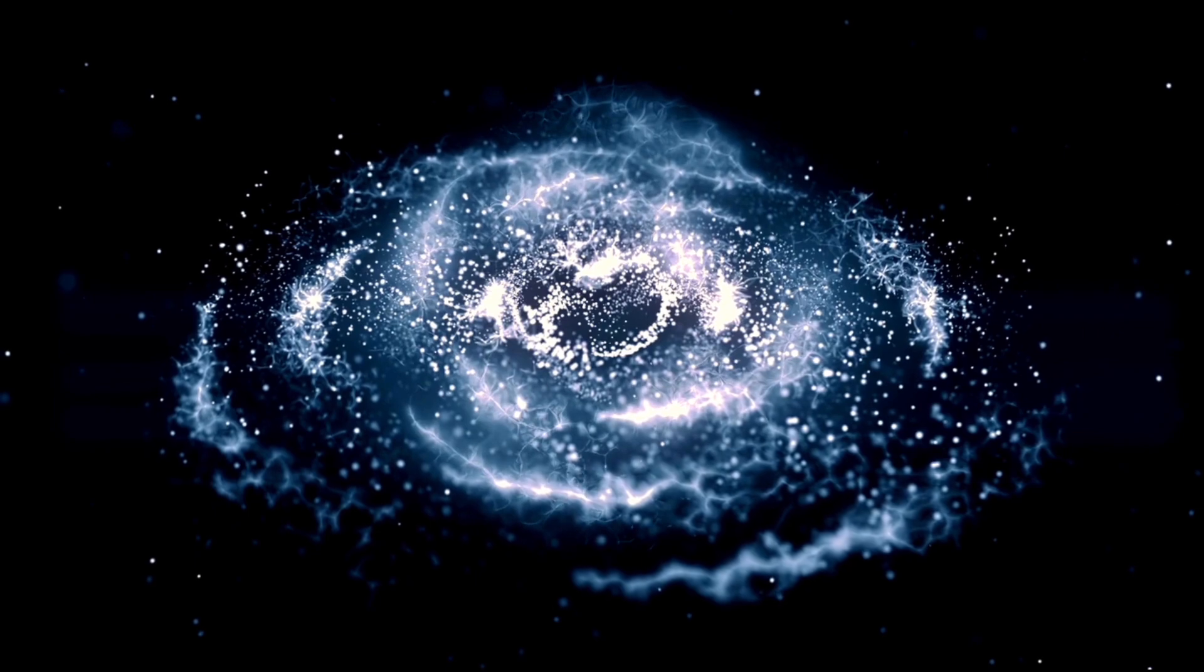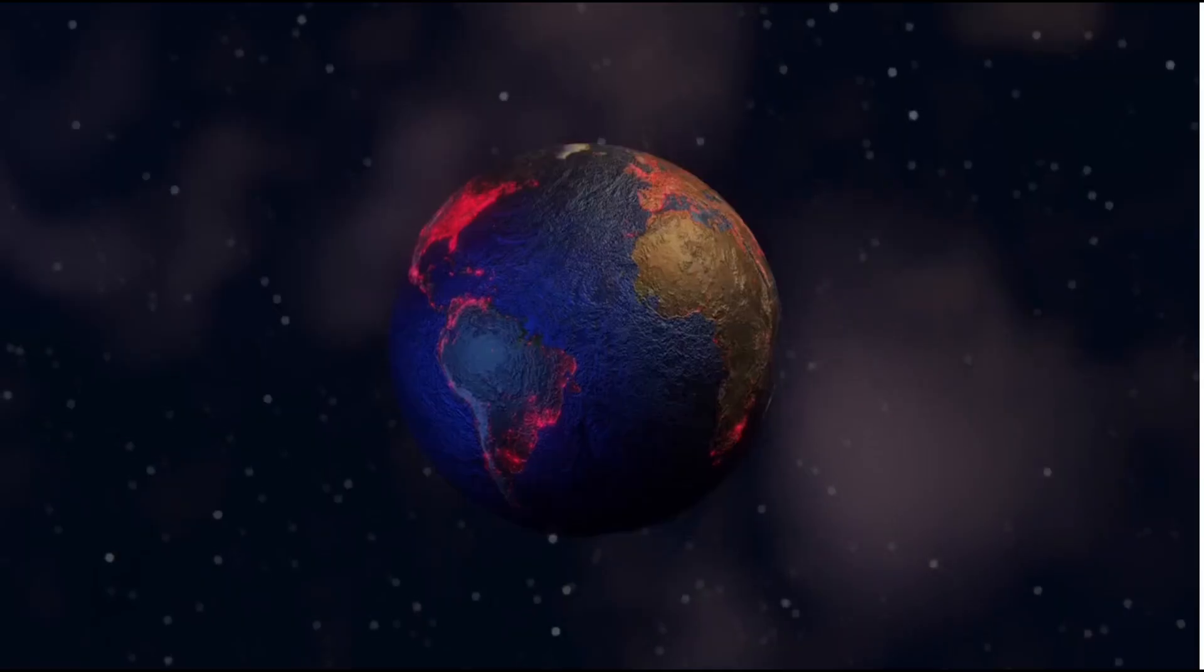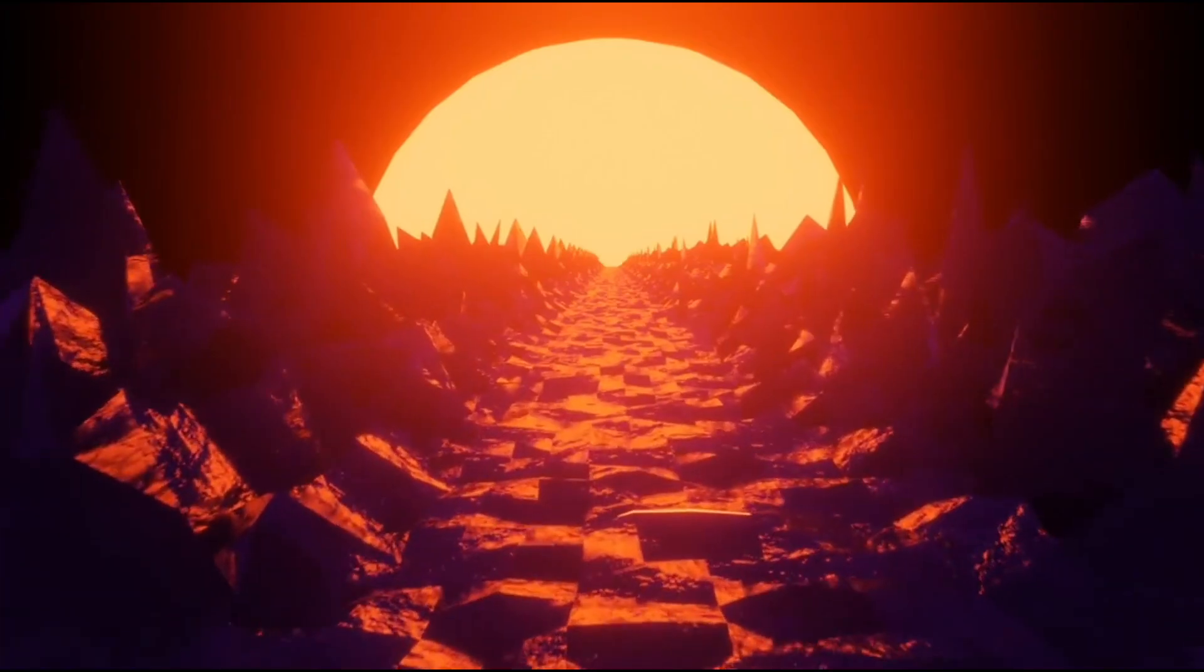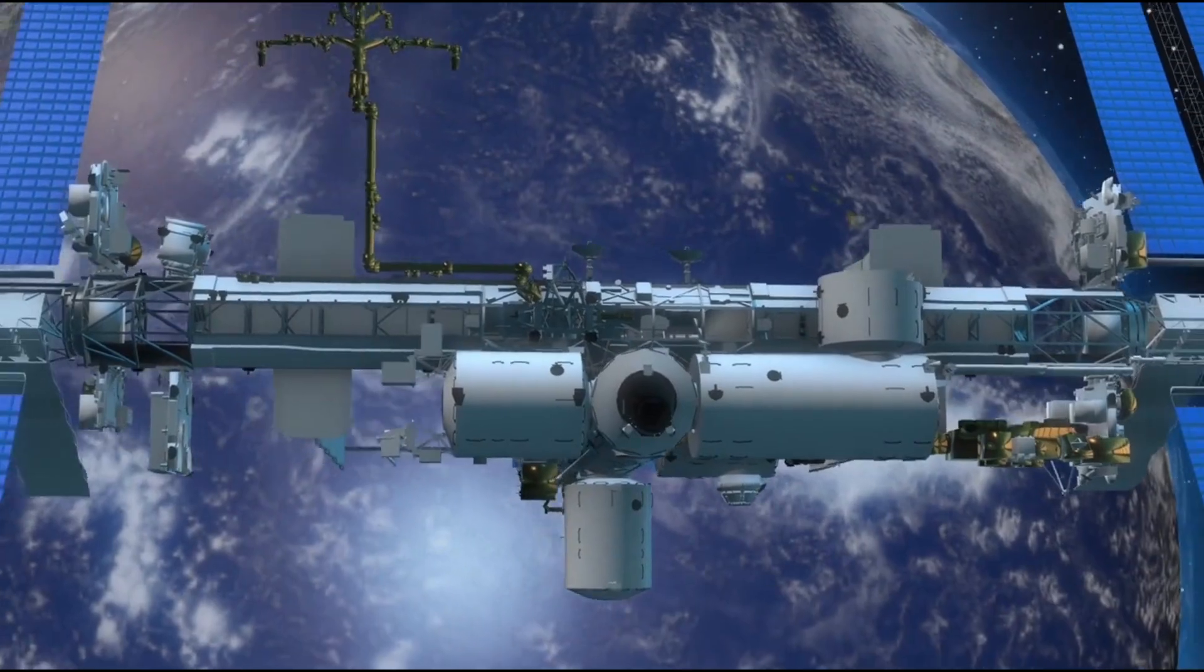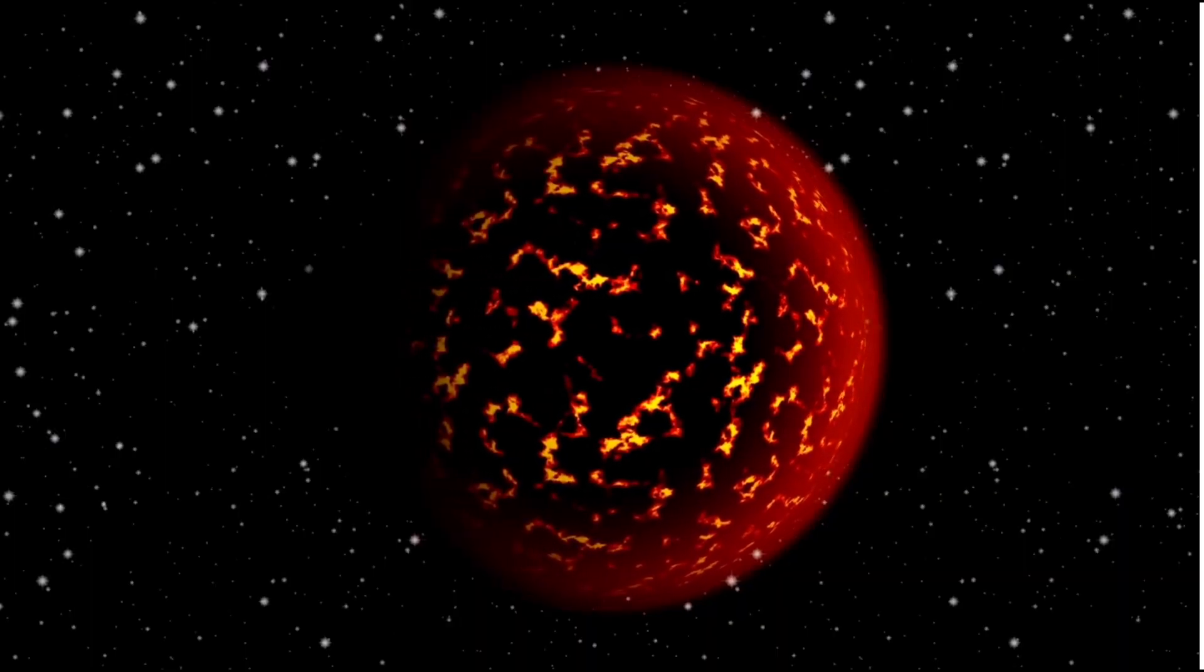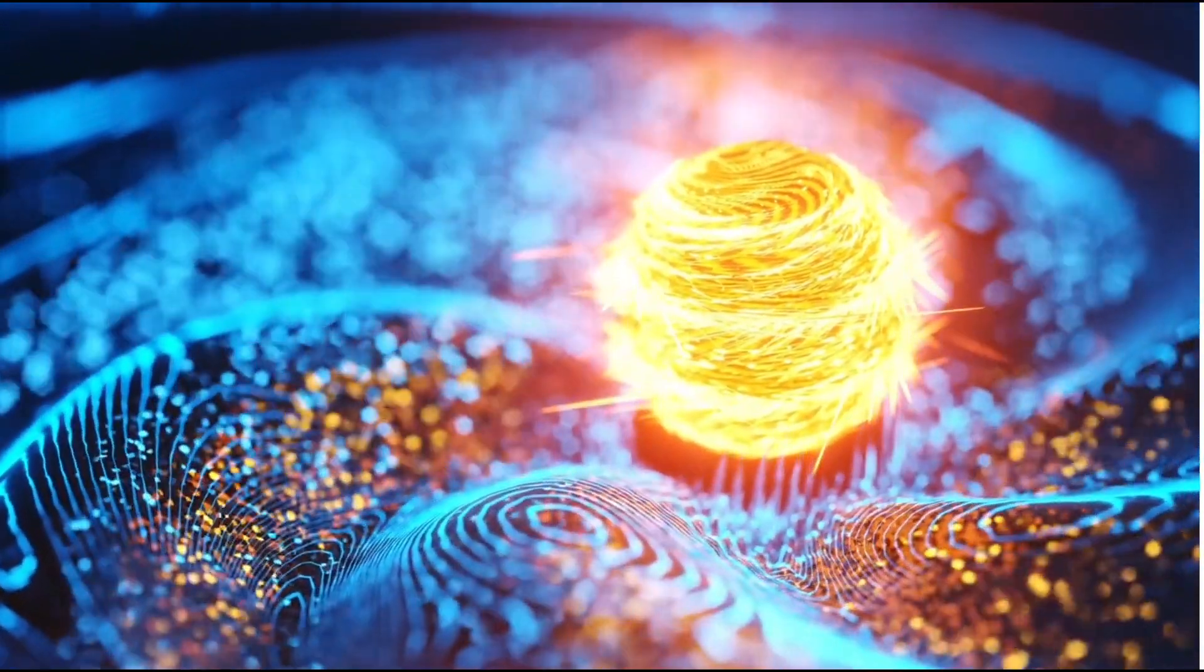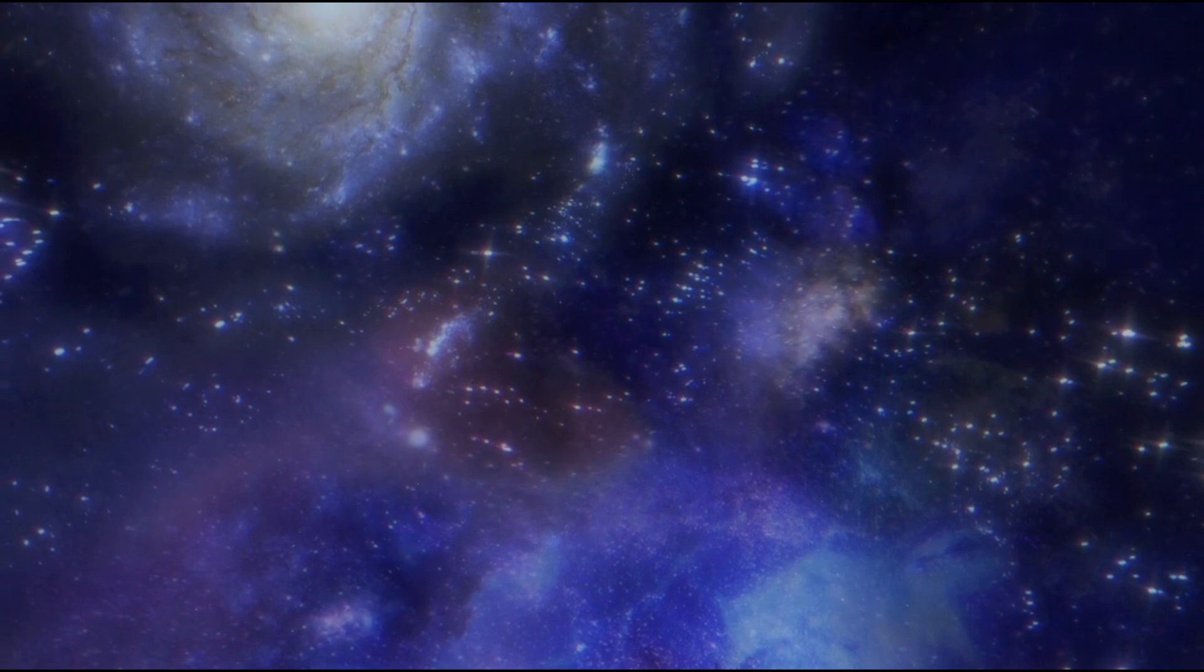This cosmic cycle enriches the interstellar medium and paves the way for new star systems. The shock waves from a supernova can compress nearby gas clouds, triggering the formation of new stars, and the radiation released during the explosion can influence the chemical composition of these new stars and planets. Understanding these processes is essential for comprehending the future of the universe. As Betelgeuse continues to evolve and exhibit unusual behavior, astronomers will intensify their efforts to study it using advanced tools like the Hubble Space Telescope and other observatories. These real-time observations will provide crucial data that will improve our models of stellar evolution, particularly in areas such as mass loss, brightness variability, and other phenomena that characterize the life cycles of massive stars.